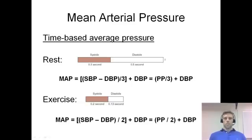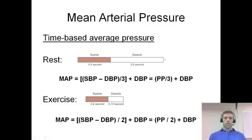Another thing you can calculate is the mean arterial pressure. It's a time-based average of the pressure. At rest, diastole lasts longer than systole — diastole lasts 0.5 seconds and systole lasts 0.3 seconds. Since there's a difference in time between these stages at rest, we have to put that into our calculation. We take pulse pressure and divide it by 3, then add our diastolic blood pressure, and that gives us our mean arterial pressure.